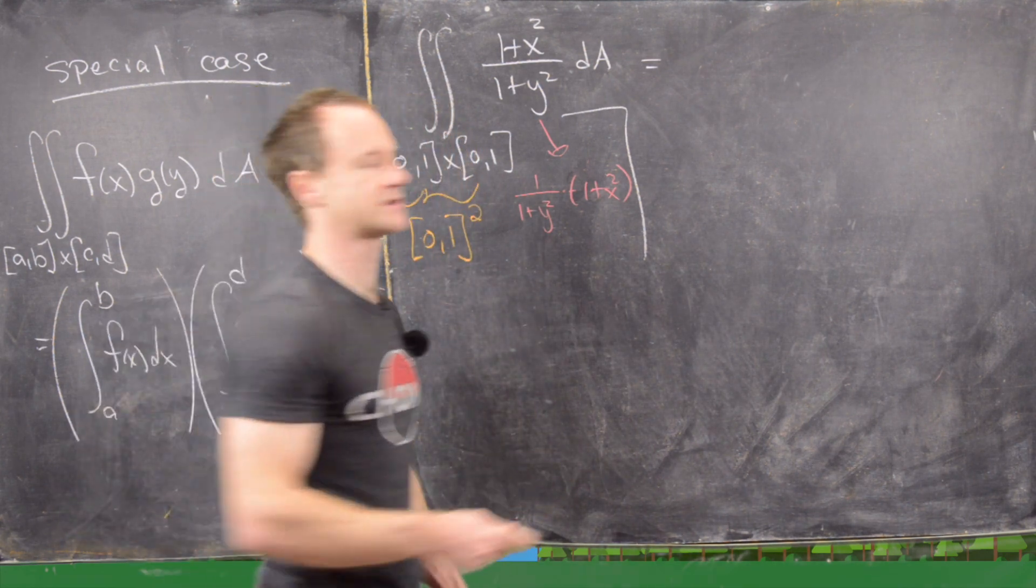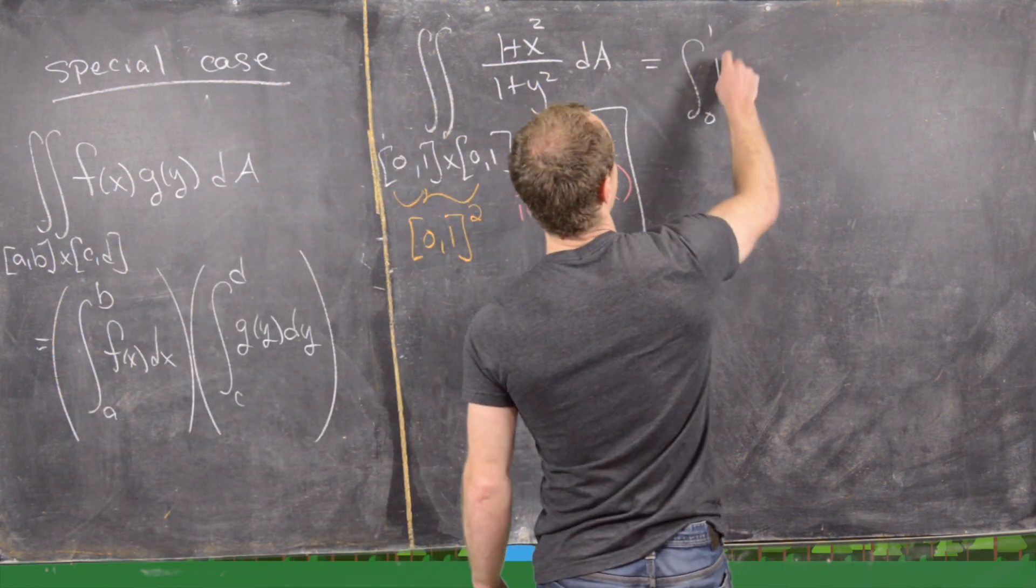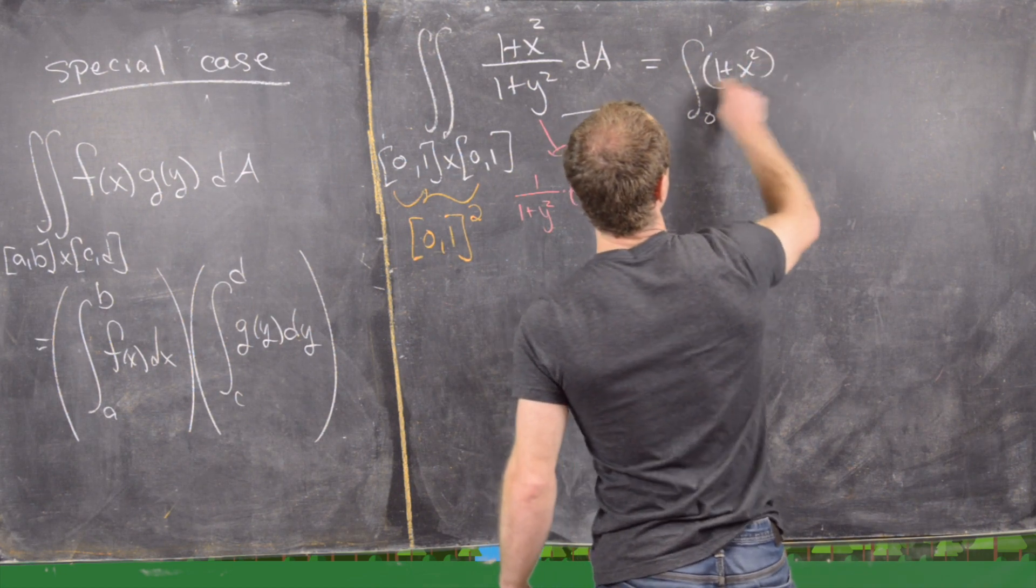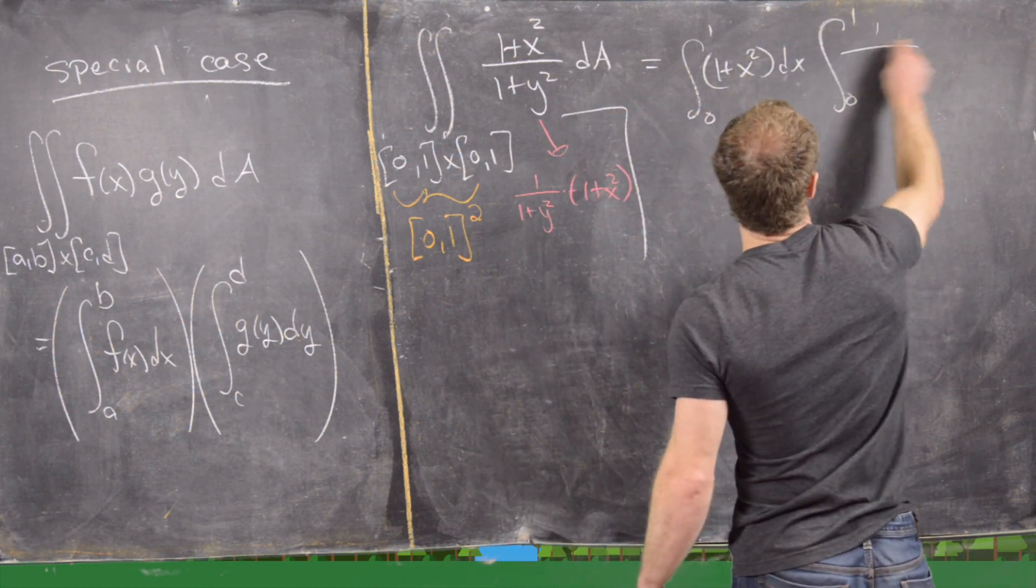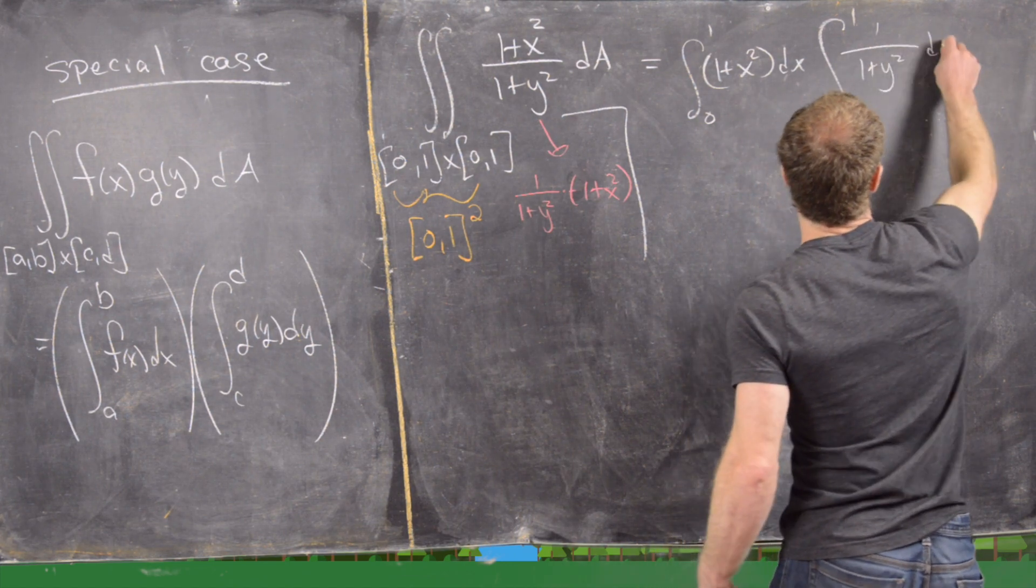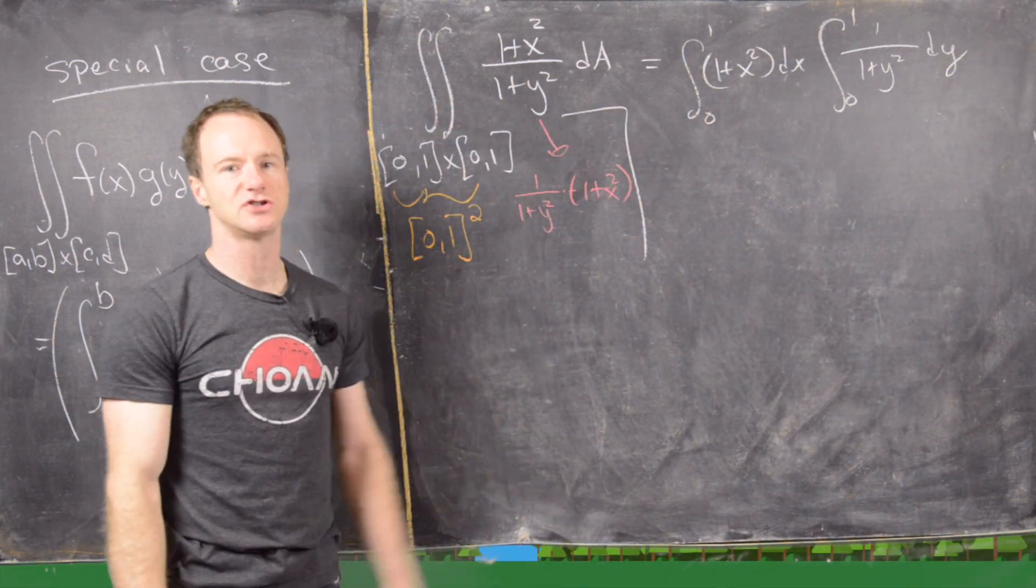So that means we can split this up into two single integrals. So we'll have the integral from 0 to 1 of (1 + x²) dx times the integral from 0 to 1 of 1/(1 + y²) dy.